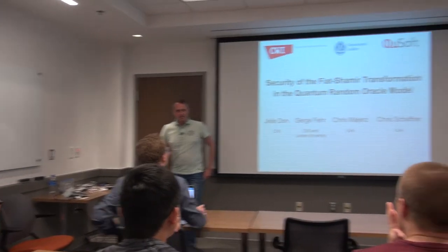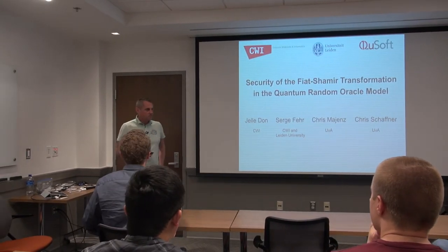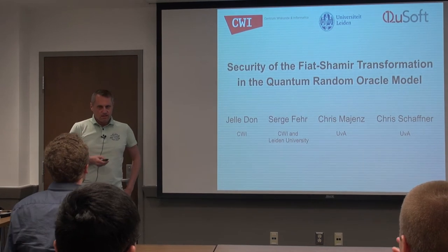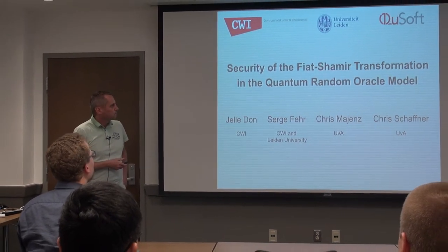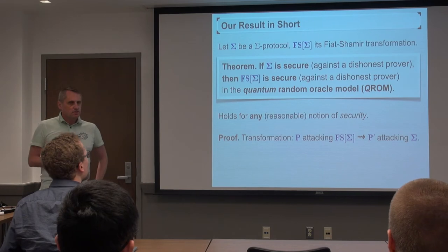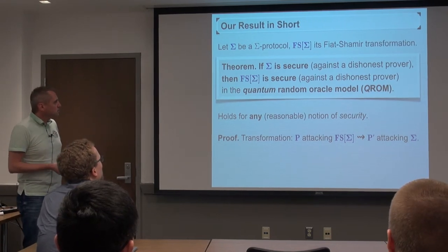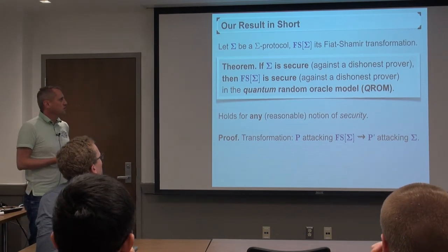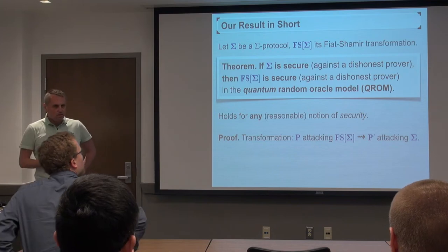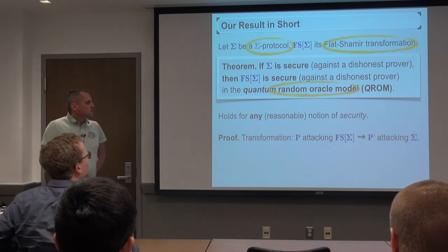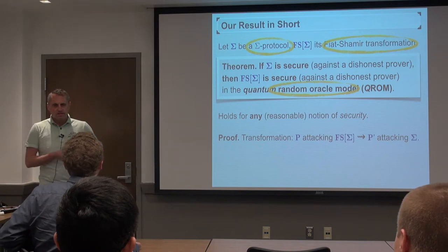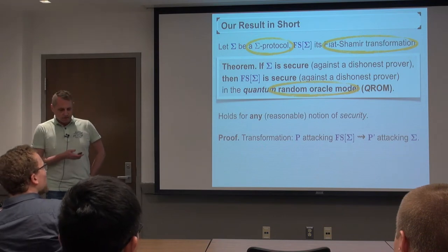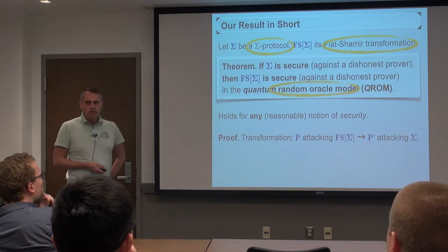Thank you for the introduction, and also thank you for having me here the entire week. This is joint work with Yelledon, Chris Mayens, and Chris Schopner. The main result can be summarized in one sentence: we show that if the sigma protocol is secure with a dishonest prover, then its Fiat-Shamir transformation is secure as well in the quantum random oracle model. I'll take some time to introduce these things and explain and discuss the result in more detail.